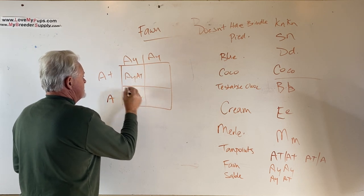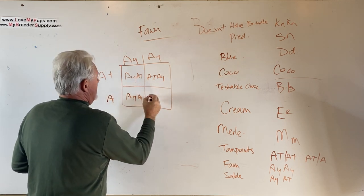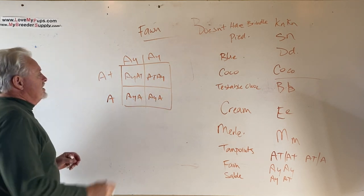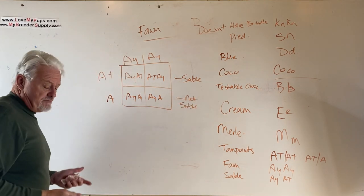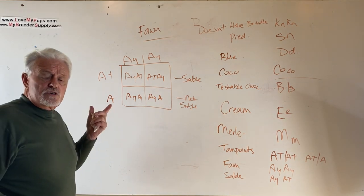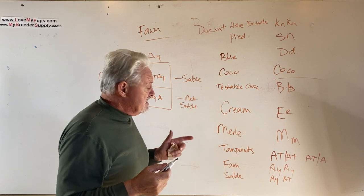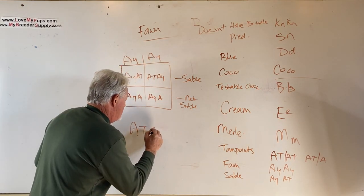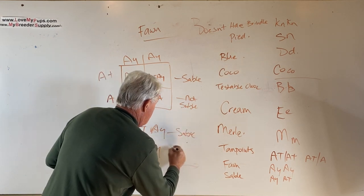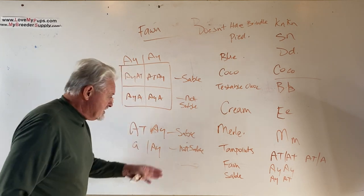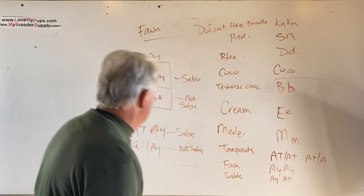The other way to get tan points is AtA. And that produces AyA—not tan points—and AtAy—these are sables, and these are not sables. So in the litter that doesn't have brindle, if half the dogs are sables, you've probably got a dog that's AtA, and you've got a 50-50 chance that your puppy we're looking at is either going to be AtAy or AyAy. This is a sable and this is not sable. So if you've got a litter that's got sables in it and your dog's not a sable, your dog probably got the Ay—it's probably AyAy.